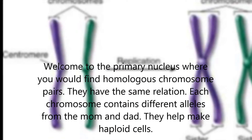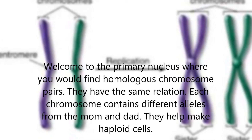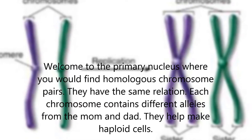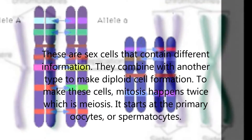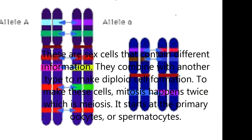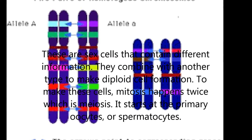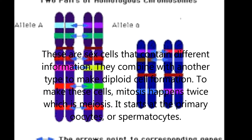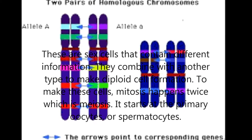Welcome to the primary nucleus where you would find homologous chromosome pairs. They have the same relation — each chromosome contains different alleles from the mom and dad. They help make haploid cells, which are sex cells that contain different information. They combine with another type to make haploid cell formation. Meiosis has happened twice — it starts at the oocytes or spermatocytes.